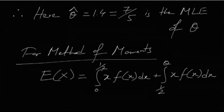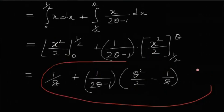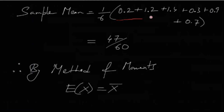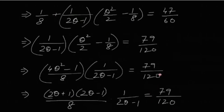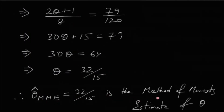The method of moments estimate is found by equating the population mean with the sample mean. The expectation of x works out to 1/8 + (1/(2θ − 1)) × (θ²/2 − 1/8). The sample mean of the six given values is 47/60. Equating the population mean with the sample mean gives a quadratic in theta, and after solving, we get θ = 32/15 as the method of moments estimate.